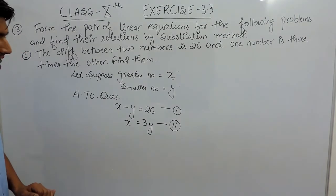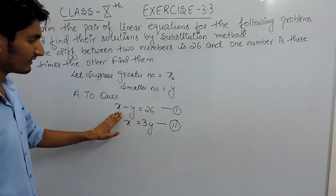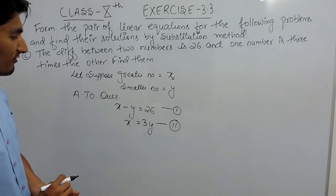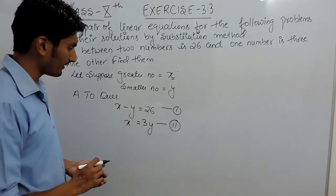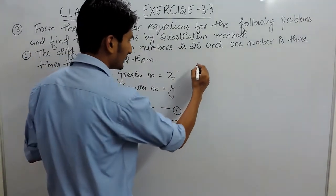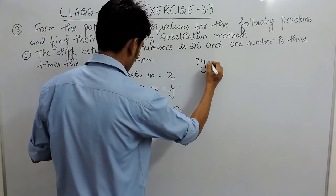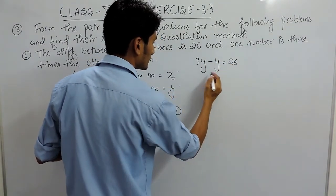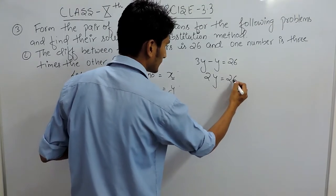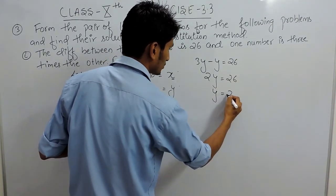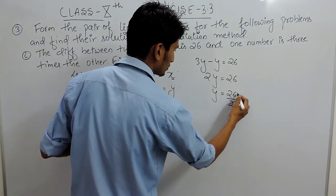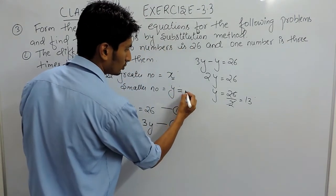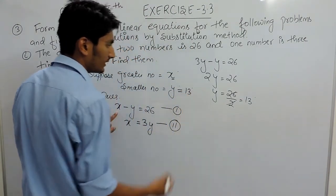Now substitute the value of x from the second equation into the first equation. Replacing x with 3y: 3y minus y equals 26, so 2y equals 26, giving y equals 13. So the smaller number is 13.